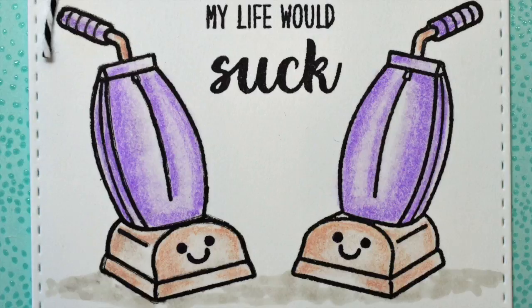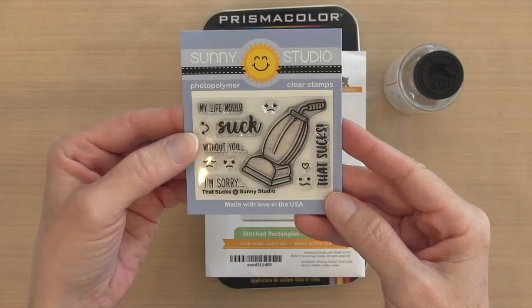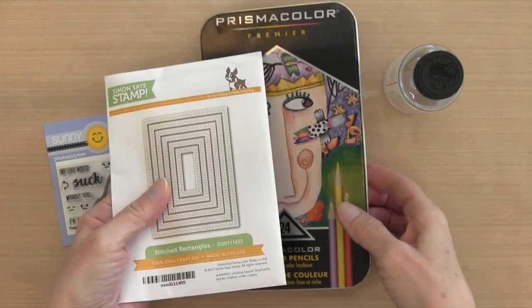Here is the stamp set that I'm using. It's by Sunny Studio, called That Sucks. It's a pretty small, inexpensive set. I'm also using the stitched rectangles by Simon Says Stamp, my Prismacolor pencils, and then here is my bottle of Gamsol.